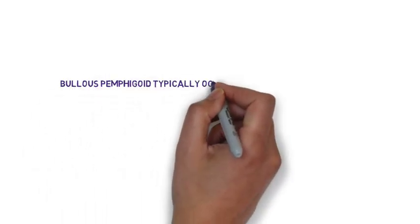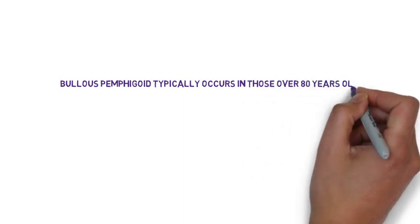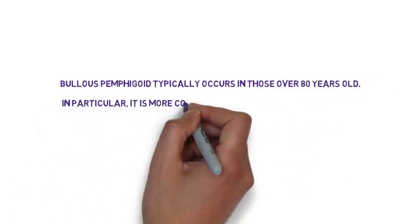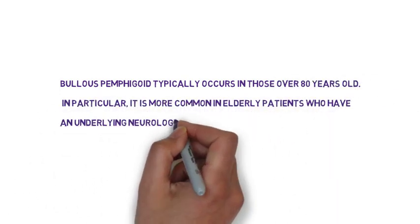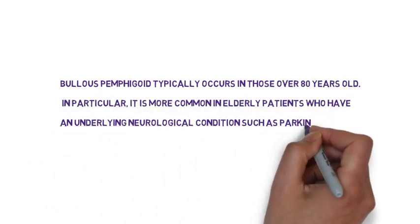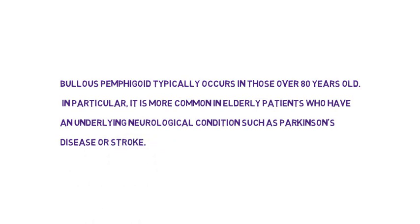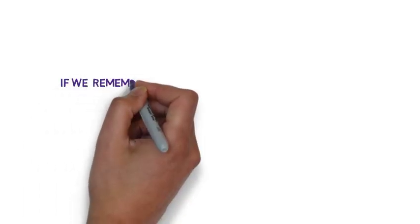Bullous Pemphigoid typically occurs in those over 80 years old, and in particular it is more common in elderly patients who have an underlying neurological condition, such as Parkinson's disease or stroke.